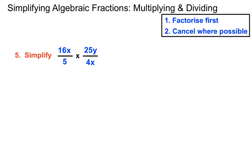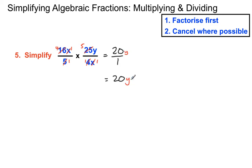Here there's nothing to factorise really, but we can do a lot of cancelling. 5 goes into the bottom once and into 25 five times; 4 goes into the 4 once and into the 16 four times; x goes into itself once and into the other x once. After we've done that we've got 20y on the top — I should add a y here as well, just to acknowledge my lack of attention to detail — and the bottom is 1, so we don't need to write that bottom 1 in. Keeps you humble when you make mistakes. Be careful — you can do better than me on that one.